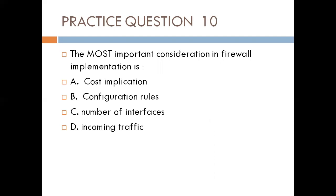Question ten. The most important consideration in firewall implementation is: A. Cost of implementation, B. Configuration rules, C. Number of interfaces, D. Incoming traffic. The answer is B, configuration rules — starting from your policy. You configure rules to accept or deny traffic, and you are already protected.